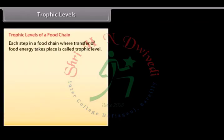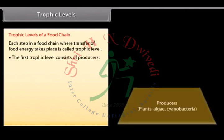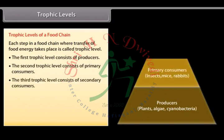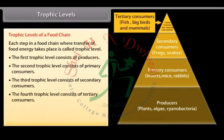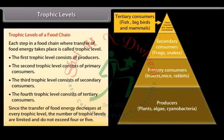Each step in a food chain where transfer of food energy takes place is called a trophic level. The first trophic level consists of producers. The second consists of primary consumers. The third consists of secondary consumers. The fourth consists of tertiary consumers. Since the transfer of food energy decreases at every trophic level, the number of trophic levels is limited and does not exceed four or five.